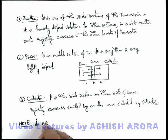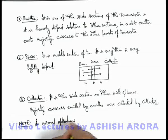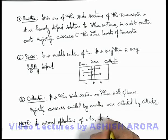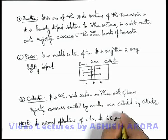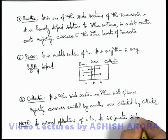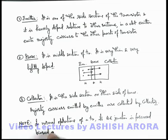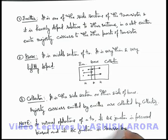That is, in normal operations of a transistor, its base-emitter junction is forward biased and its base-collector junction is reverse biased.